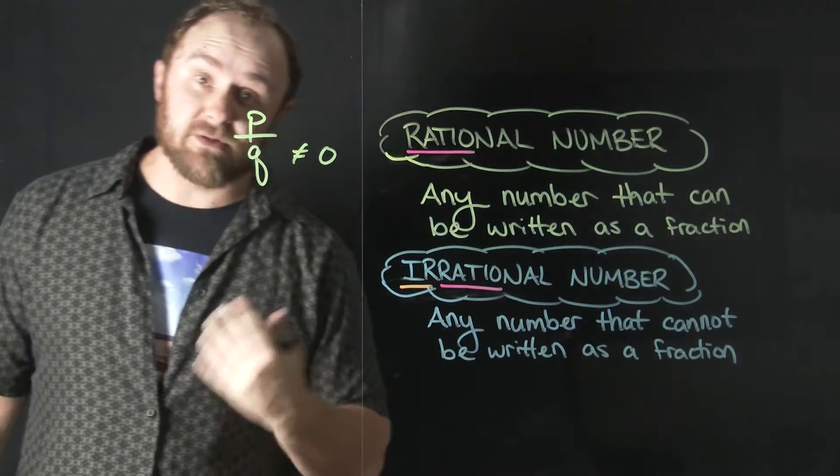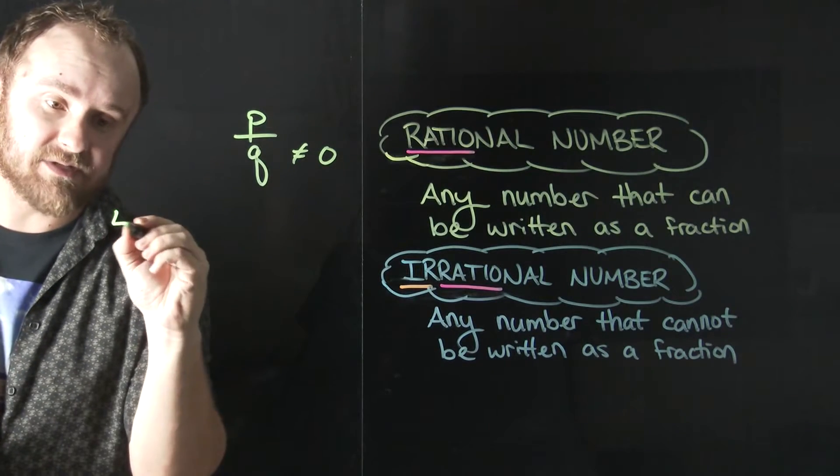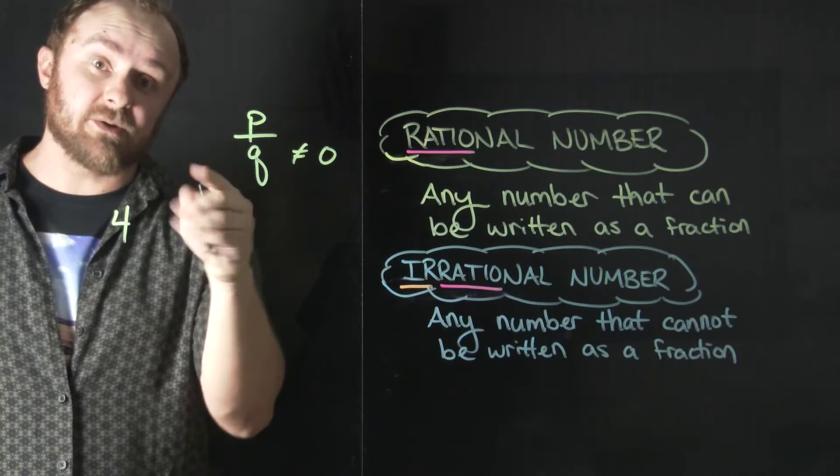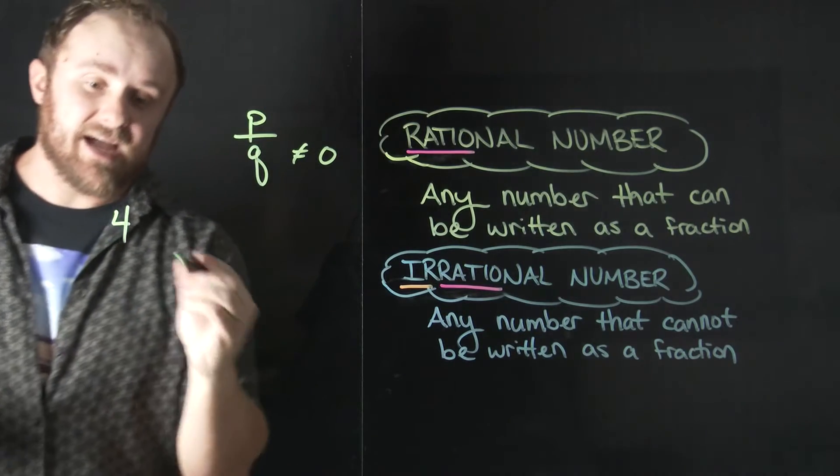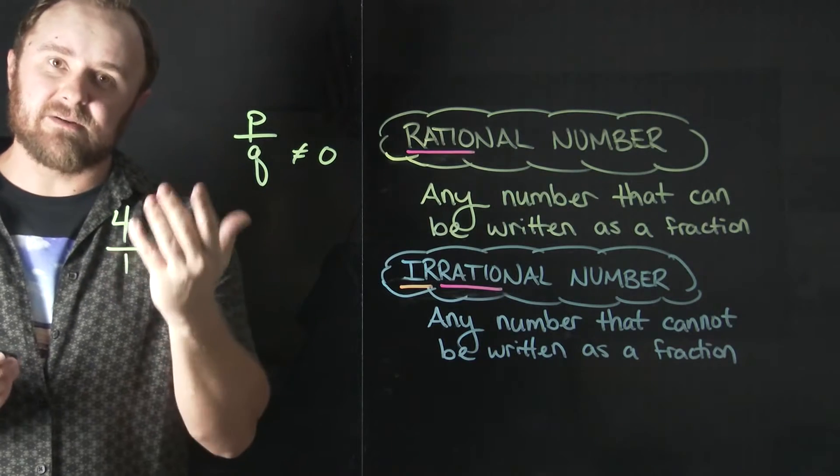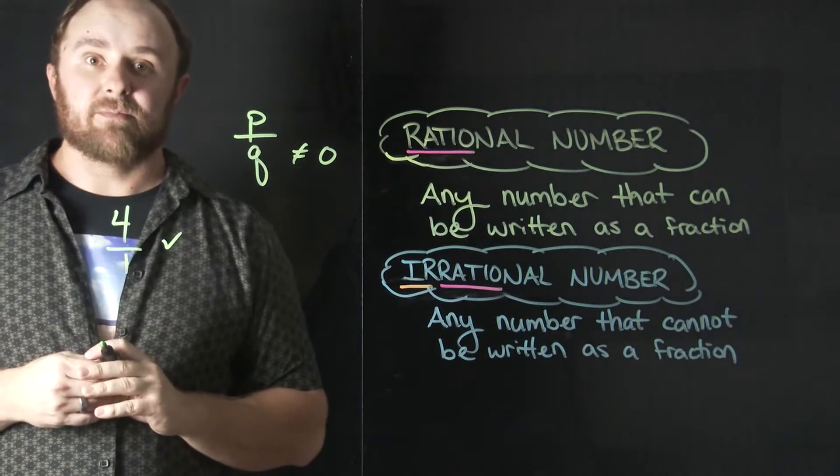So let's look at some examples. The first category of rational numbers are just the simple whole numbers that we're used to. The number four, for example, even though this isn't written as a ratio, it's not written as a fraction just yet, I can easily put a one underneath that without changing the value. This is still four, it's four divided by one. But I can turn it into a fraction, so that becomes a rational number.